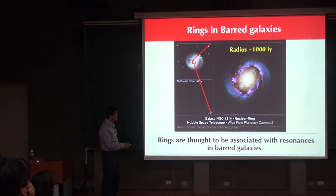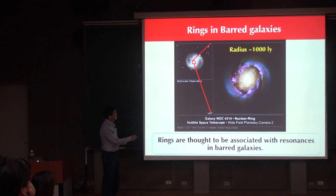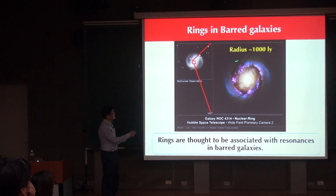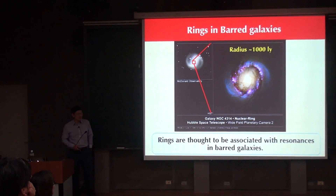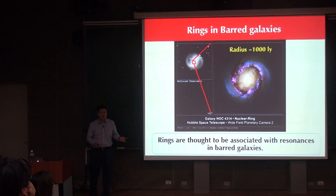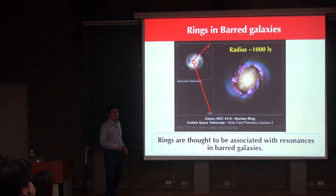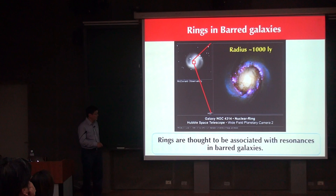For galaxy NGC 4314 observed by Hubble, you can see the central region magnified, and at the center you see dark regions caused by dust extinction, and beautiful spots of star formation. This is called a nuclear ring of star formation, and the radius here is much smaller — about 1,000 light years. These inner nuclear rings and outer rings can occur at the same time in some galaxies, and are often thought to be related to resonances in bar galaxies.